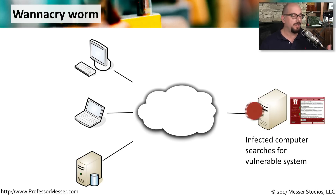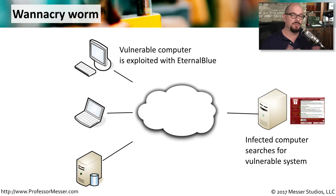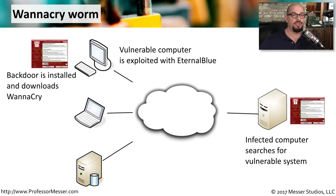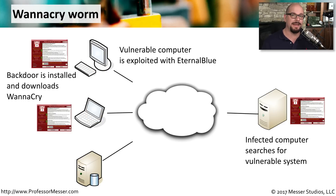Once it finds a device susceptible to this vulnerability, it installs and runs software to embed itself onto that computer — exploiting it using a third-party utility called EternalBlue. EternalBlue then installs a backdoor, and that backdoor reaches out to the command-and-control server and downloads the latest version of WannaCry. Now another system is infected. The process begins again: a vulnerable system is found, the backdoor is installed, the software is downloaded, and another system becomes encrypted.